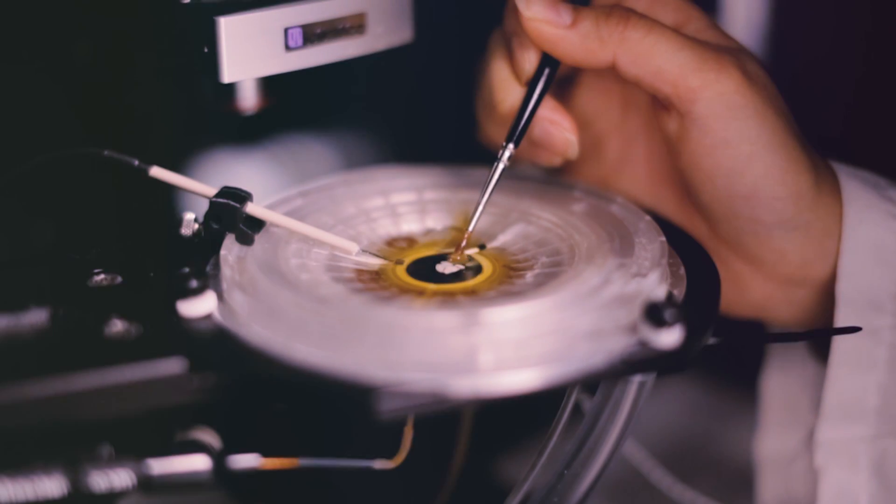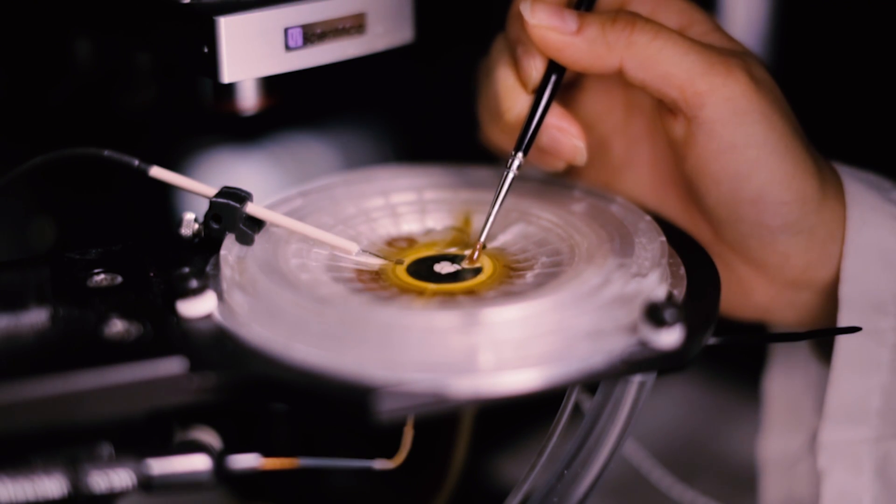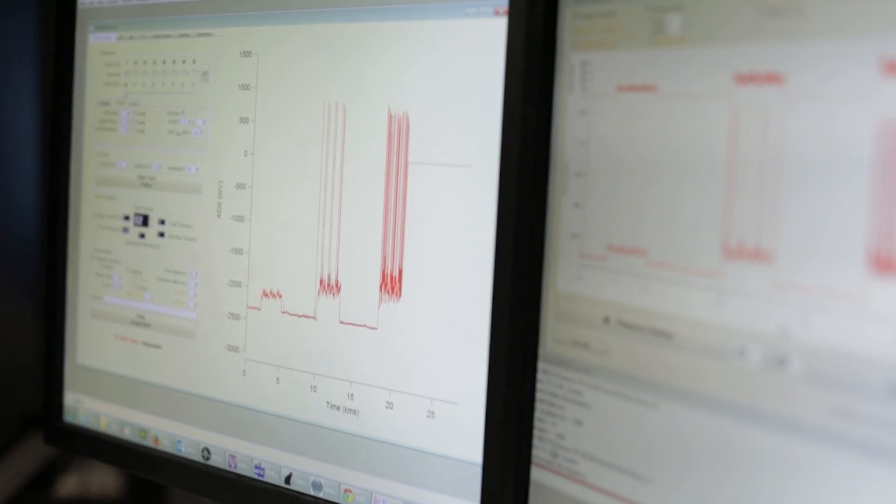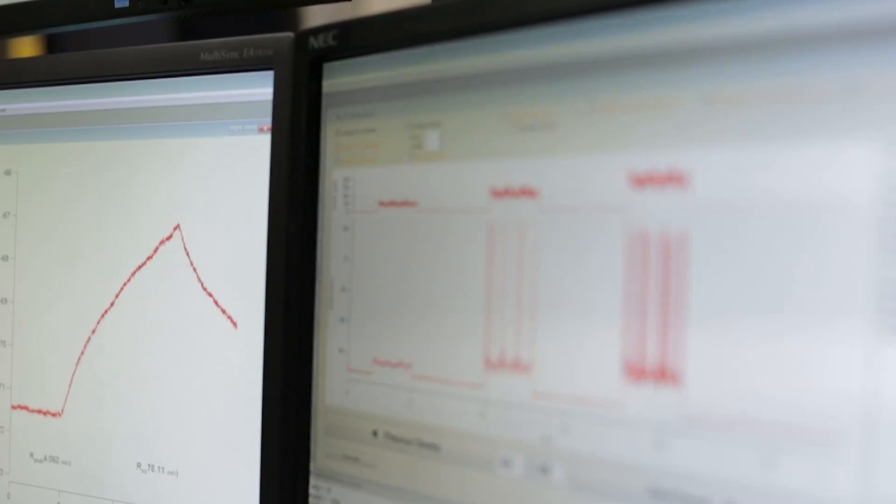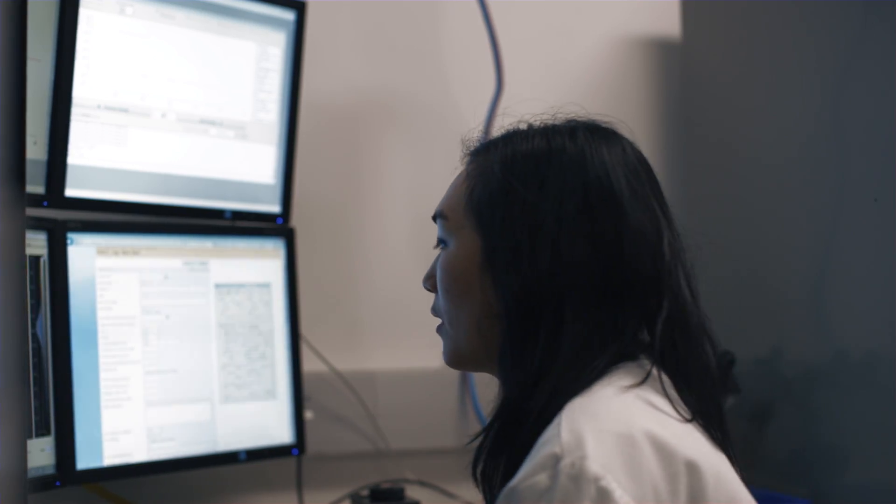Patch clamp electrophysiology is simply the measurement of the voltages or currents in a neuron. Neurons use electrical signals to communicate and by measuring the voltage and currents, you can see how they're communicating.